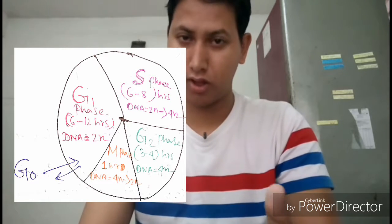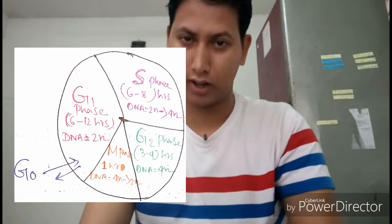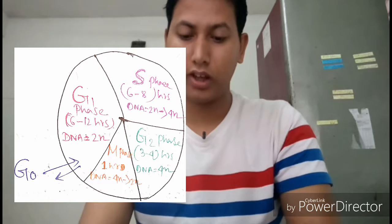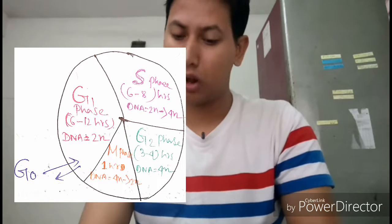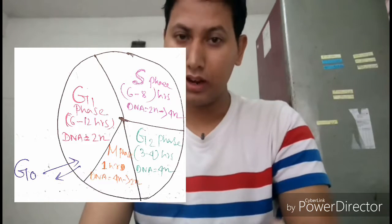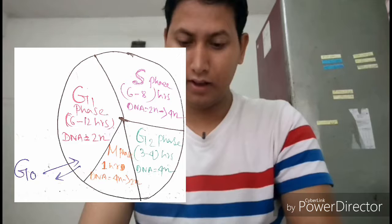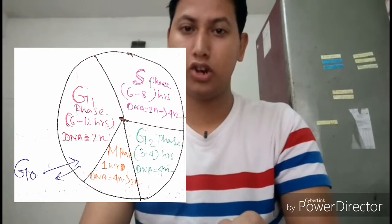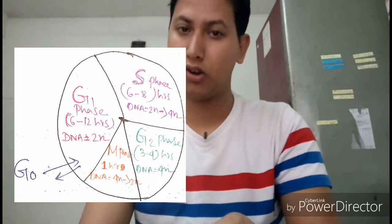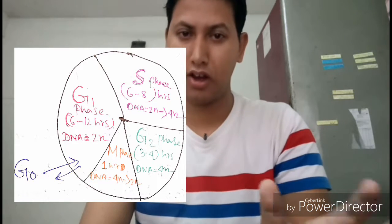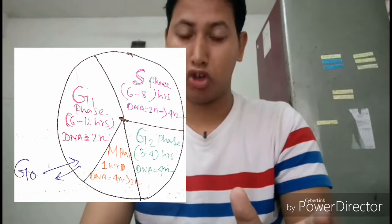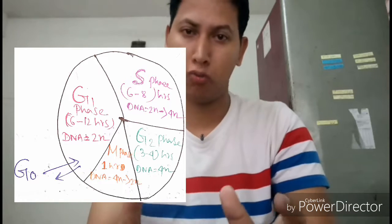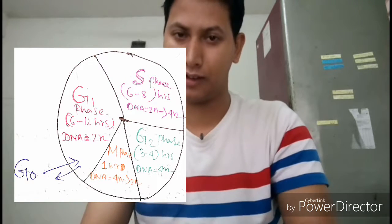This is the G2 phase, which means the second growth phase. We are going to talk about G2, which lasts about 3–4 hours. The DNA does not break. The G2 phase involves a mitosis-promoting factor, also called MPF, which has a combined number center.